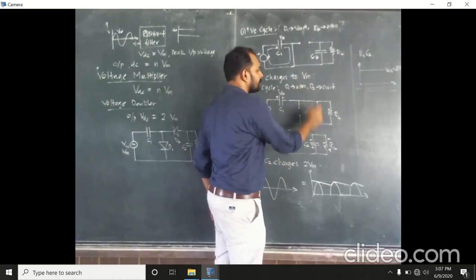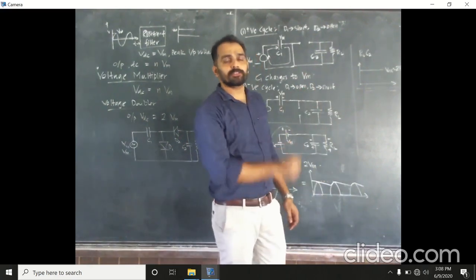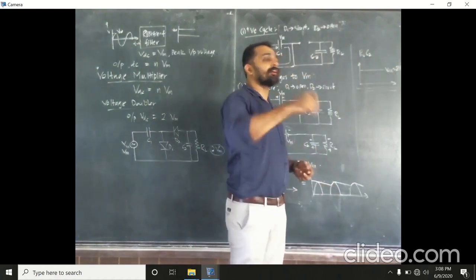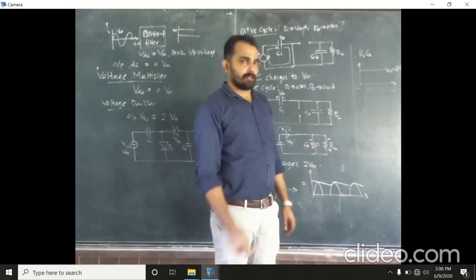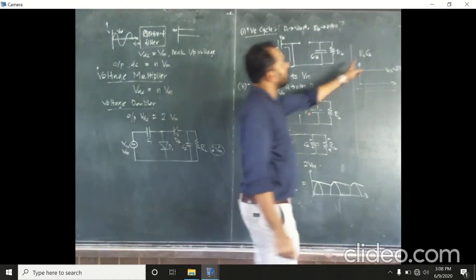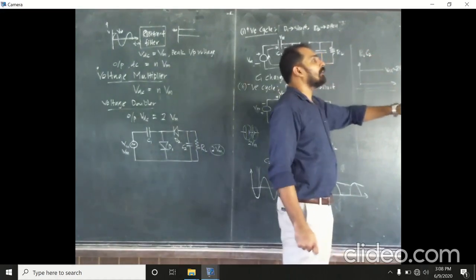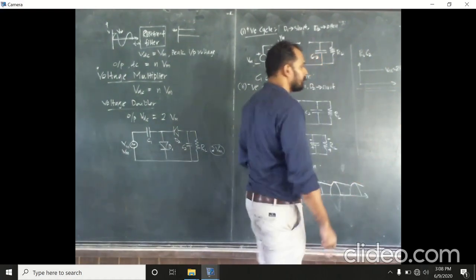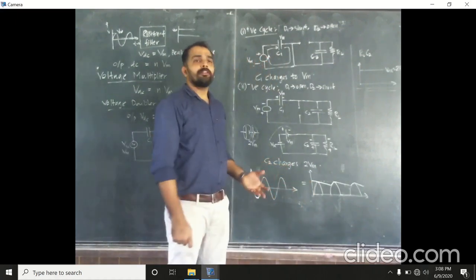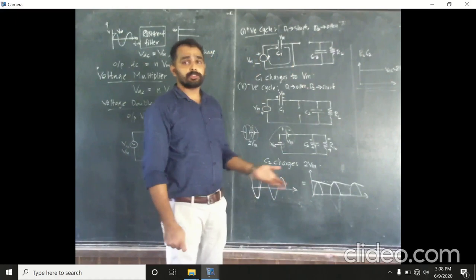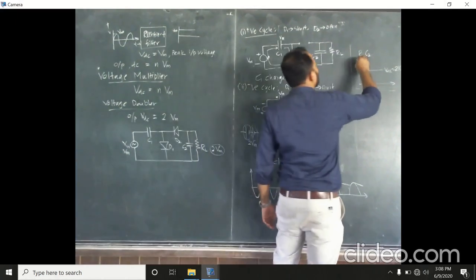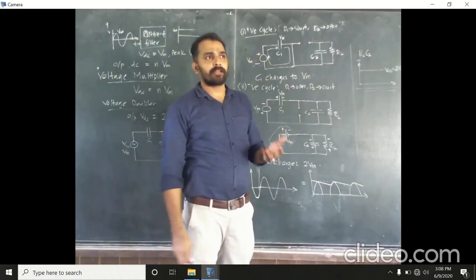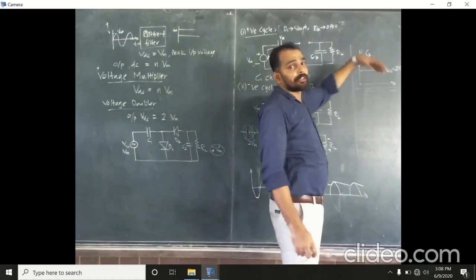The voltage is almost constant and the voltage is almost 2Vm. The time constant should be very large compared to the period of the input signal. For a 50 Hz frequency, the period is 1/50 = 0.02 seconds. For practical purposes, RL is taken in the kilohm range and C2 is taken as 100 microfarad.